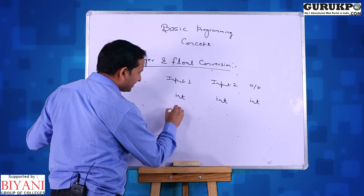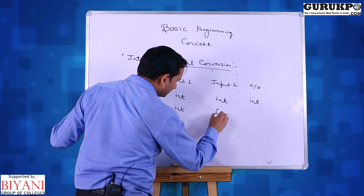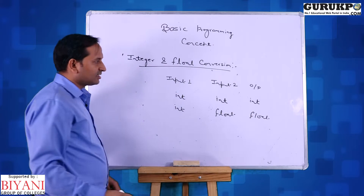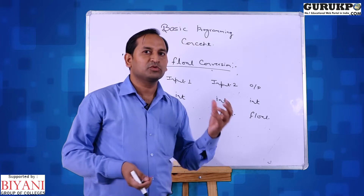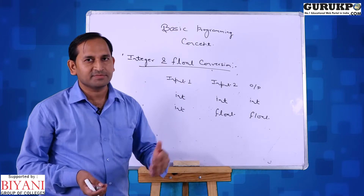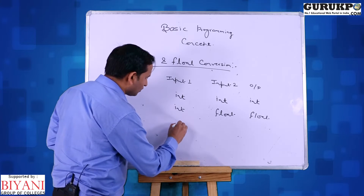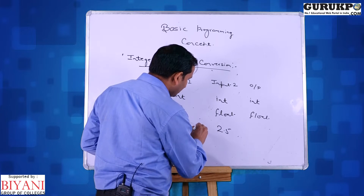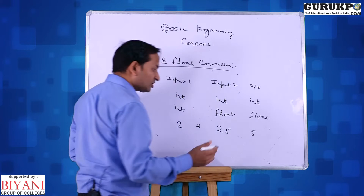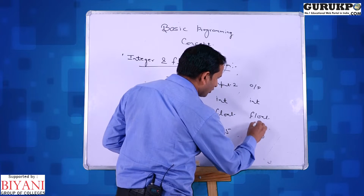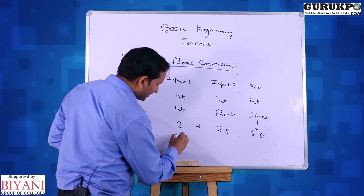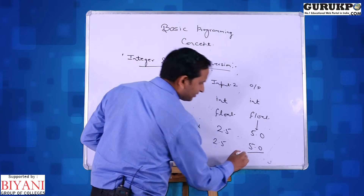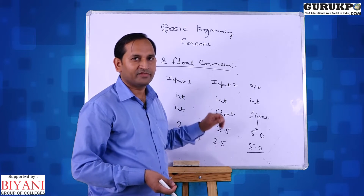The second case: suppose the first input is integer and the second input is float, then the output will be float. The combination of integer and float always gives float. For example, 2 is integer and 2.5 is float. If we multiply 2 into 2.5, it gives 5 in mathematics, but in C programming it gives 5.0. Also, 2.5 plus 2.5 gives 5.0, not 5 — this is the key point between integer and float data types.